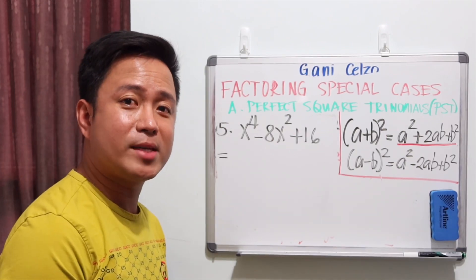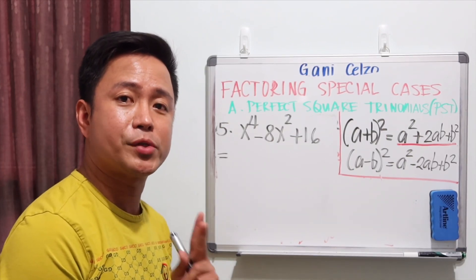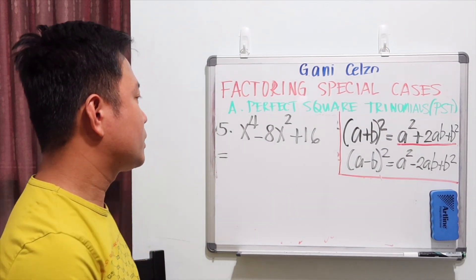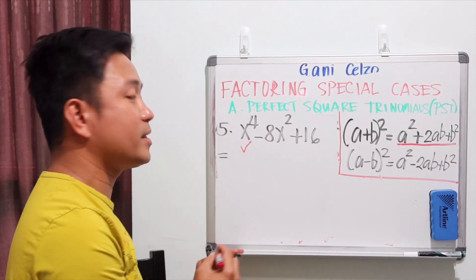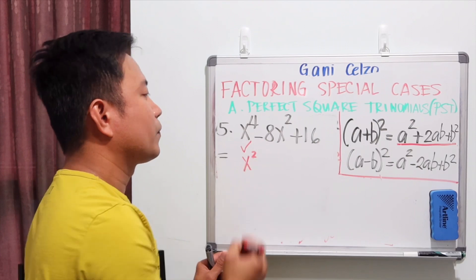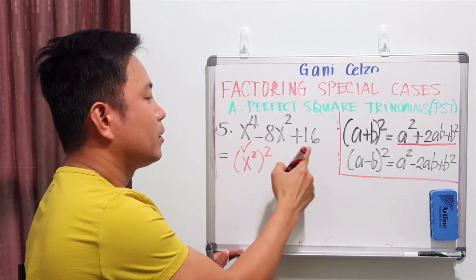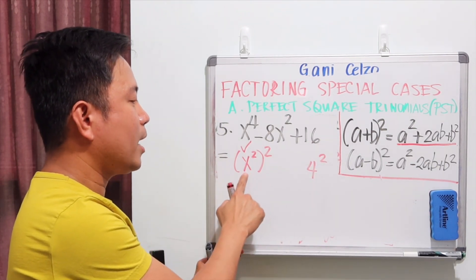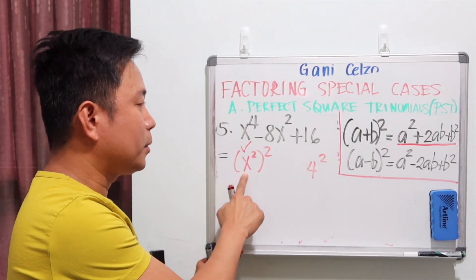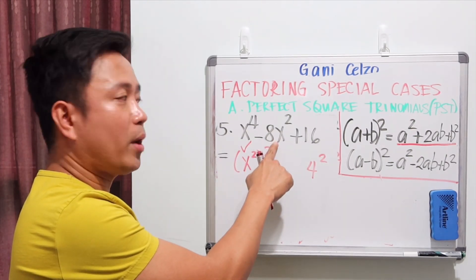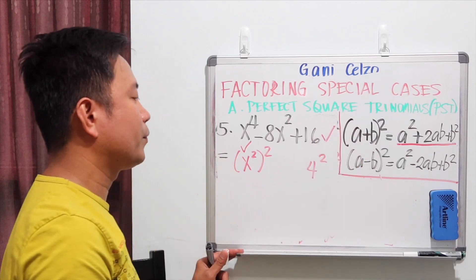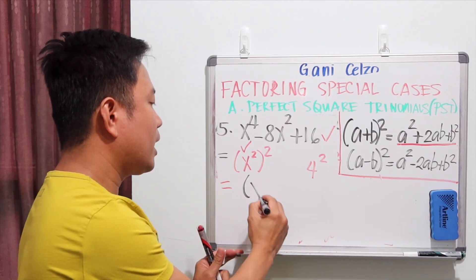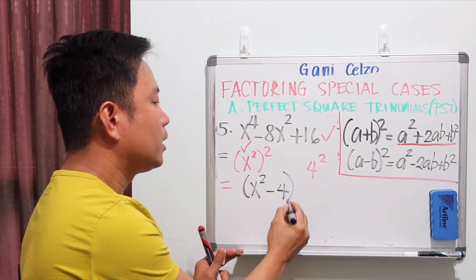Now let's see if example 5 is also a PST, using those three conditions: x⁴ - 8x² + 16. The first term is a perfect square because it is x² times itself. 16 is 4², and if you multiply 4 by x², that's 4x²; doubled, you get negative 8x². So yes, this is a perfect square trinomial, and we can factor it as (x² - 4)².